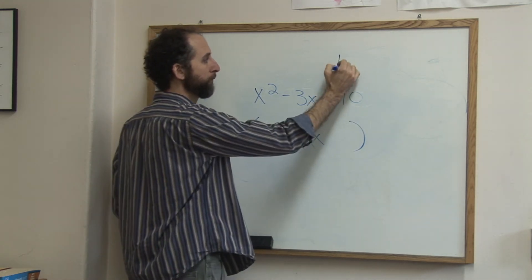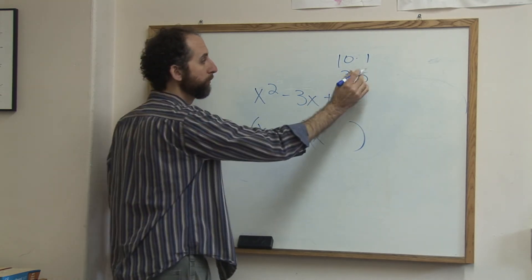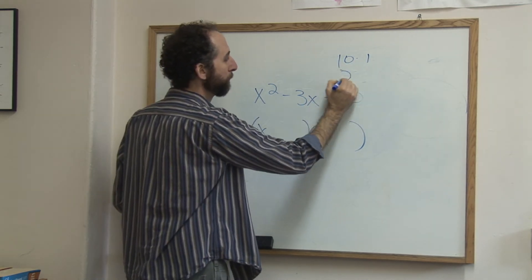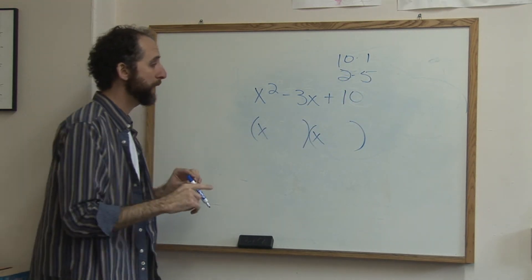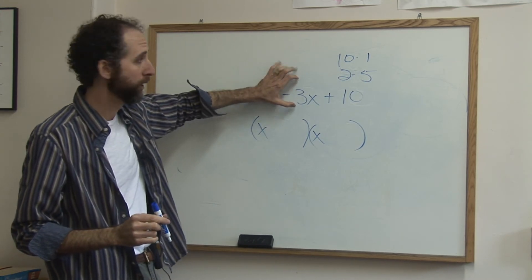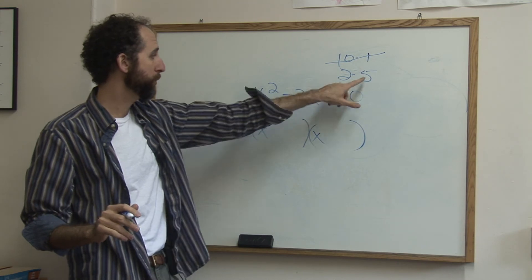It's either 10 and 1, or 3 and 5. Oh, sorry, 2 and 5. So 10 times 1 is 10, 2 times 5 is 10. Now you've got to say, which of these two could combine to be 3? There's no way 10 and 1 combine to be 3, so that's out. It's got to be 2 and 5.